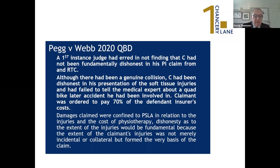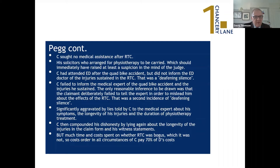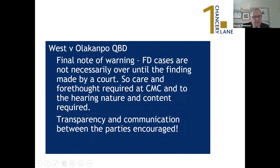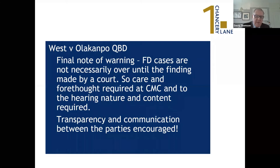Peg sets out a detailed approach worth reading, but an important part of it is the decision-making about how much time to spend, what evidence to obtain, and what consequences to seek. It's not just about establishing fundamental dishonesty — you also have to look at the integers of it. Cases aren't necessarily over until the finding is made, so you have to construct this with forethought at every stage: disclosure, witness statements, case management conferences, costs considerations, and directions — addressing evidence pointing to fundamental dishonesty at each stage.